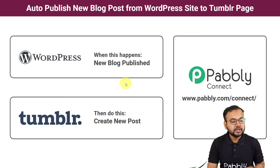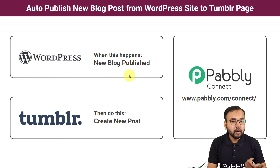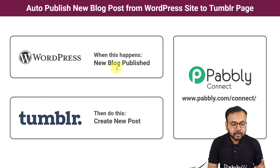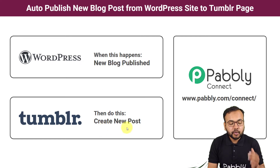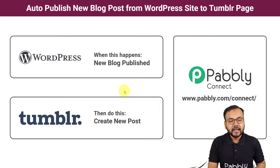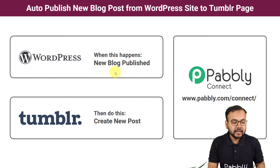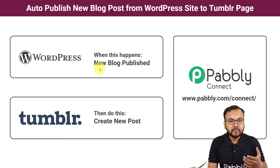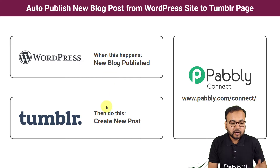Here is the flow of the automation: when you publish a new blog on your WordPress website, the link along with some details of that blog will be created as a new post from your Tumblr account. You don't have to copy the data of your blog manually and create a post every time.